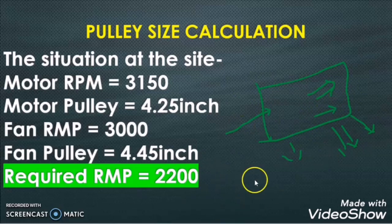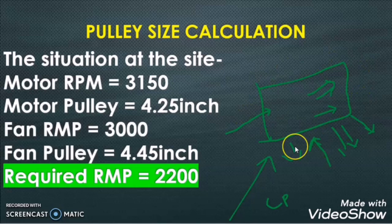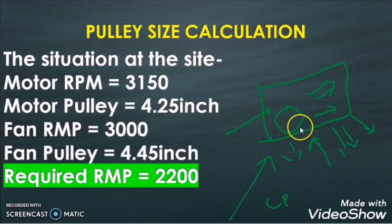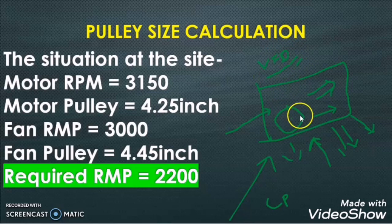Before investigating this, we already investigated the CDP pipe slope lines — it was perfect. Then we investigated inside the FAHU and found this problem. The first solution was to regulate the speed of the motor by using a VFD — variable frequency drive. But unfortunately we don't have a VFD for the motors; it runs from a star-delta starter.